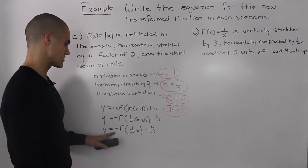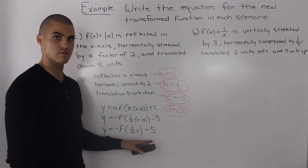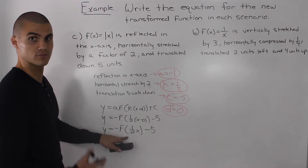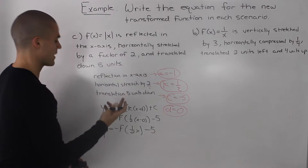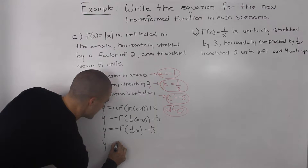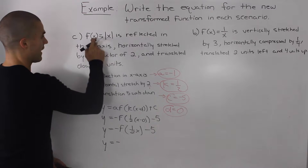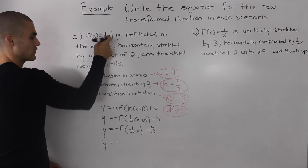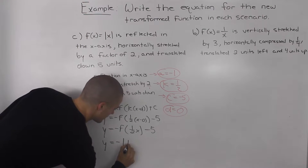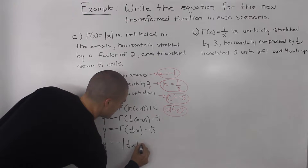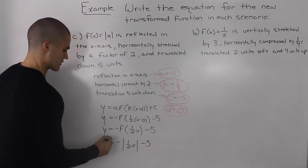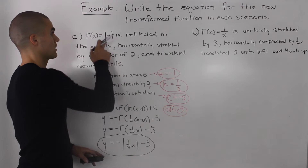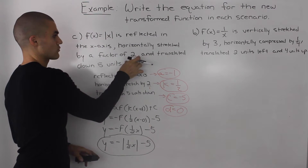Now, y equals negative f of 1 half x minus 5 is just a general transformation — it could be applied to any parent function. The parent function we need to apply in this scenario is the absolute value of x. So y equals negative, and then f of 1 half x, if f of x is absolute value x, f of 1 half x would be the absolute value of 1 half x. So the final answer is y equals negative absolute value of 1 half x, minus 5.